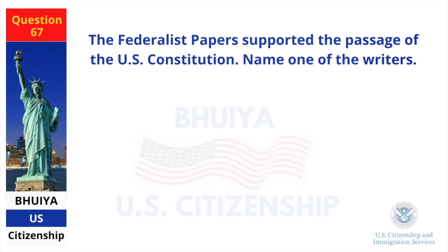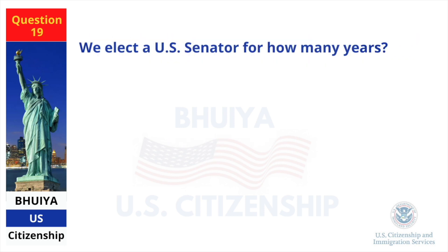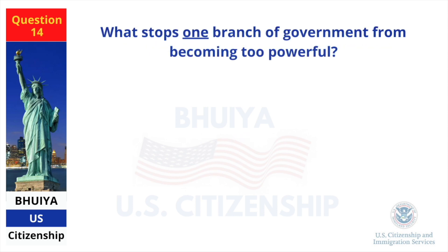The Federalist Papers supported the passage of the US Constitution. Name one of the writers. James Madison. We elect a US Senator for how many years? Six. What stops one branch of government from becoming too powerful? Checks and balances.